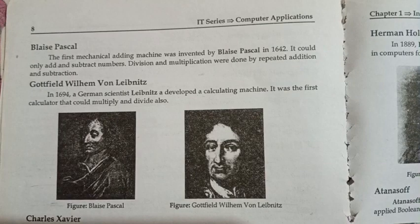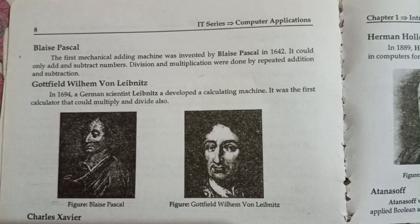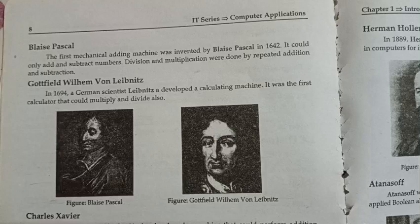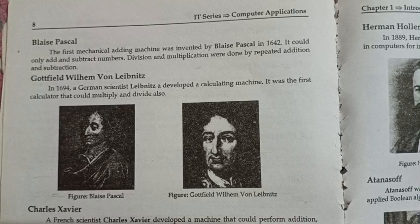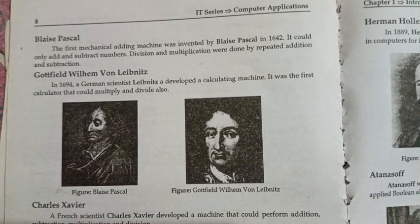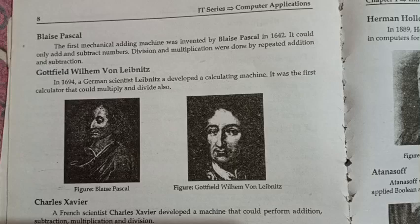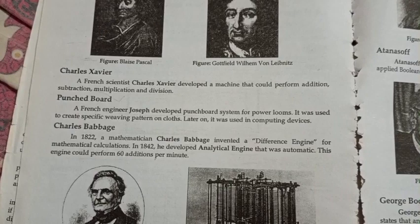Pascal's machine could only add and subtract numbers; division and multiplication were done by repeated addition and subtraction. In 1694, the German scientist Gottfried Wilhelm Leibniz developed a calculating machine. It was the first calculator that could multiply and divide. French scientist Charles Xavier also developed a machine that could perform all these functions.